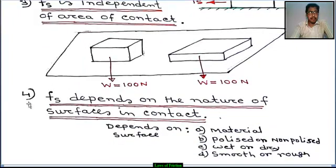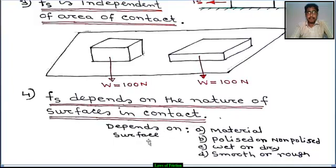Next, the fourth law of friction: static friction fs depends on the nature of the surfaces in contact. It is dependent on the contact surface — specifically, the nature of the contact surface.